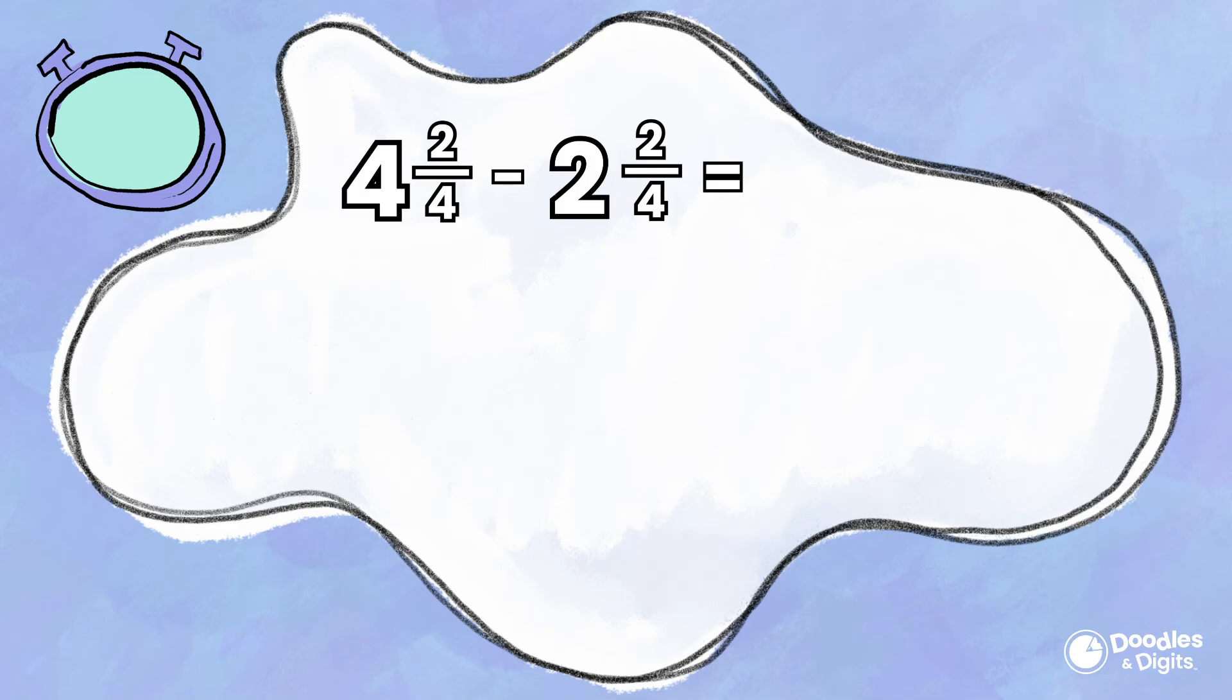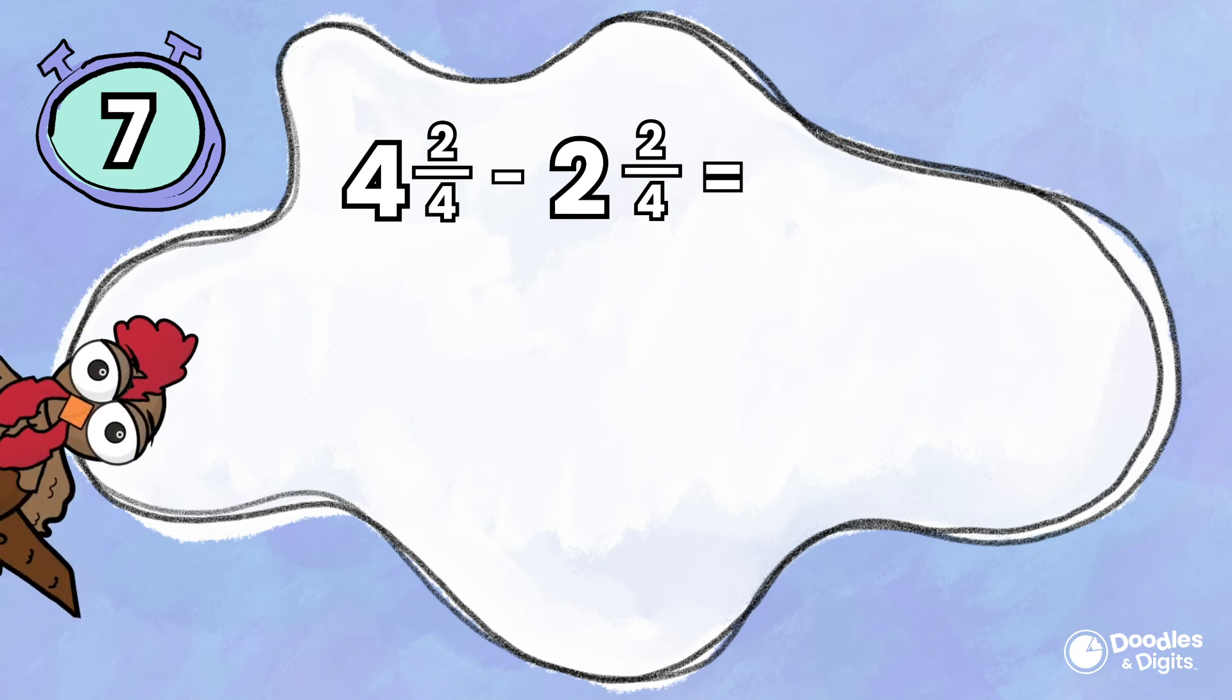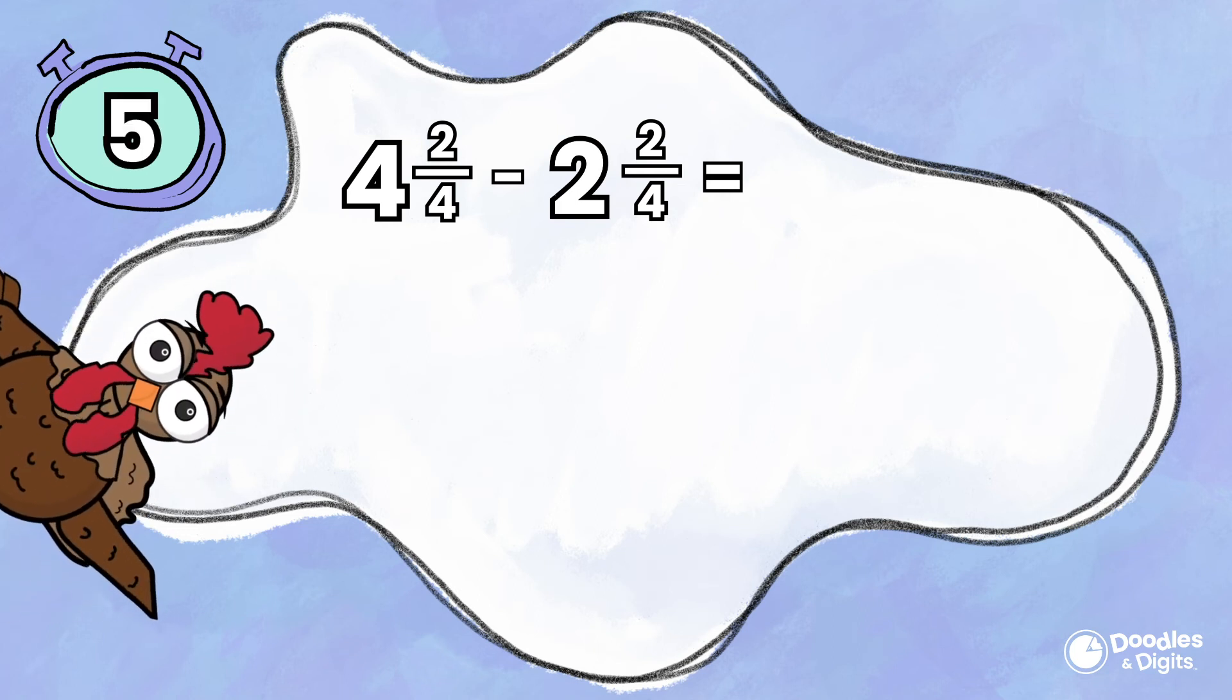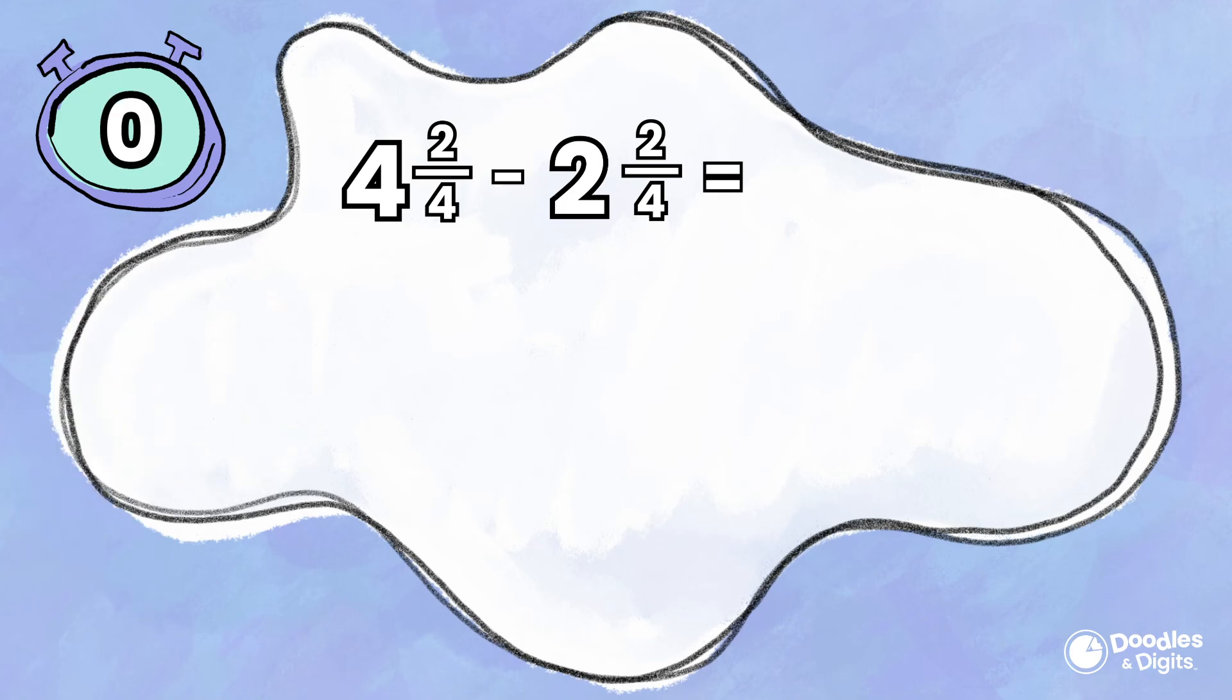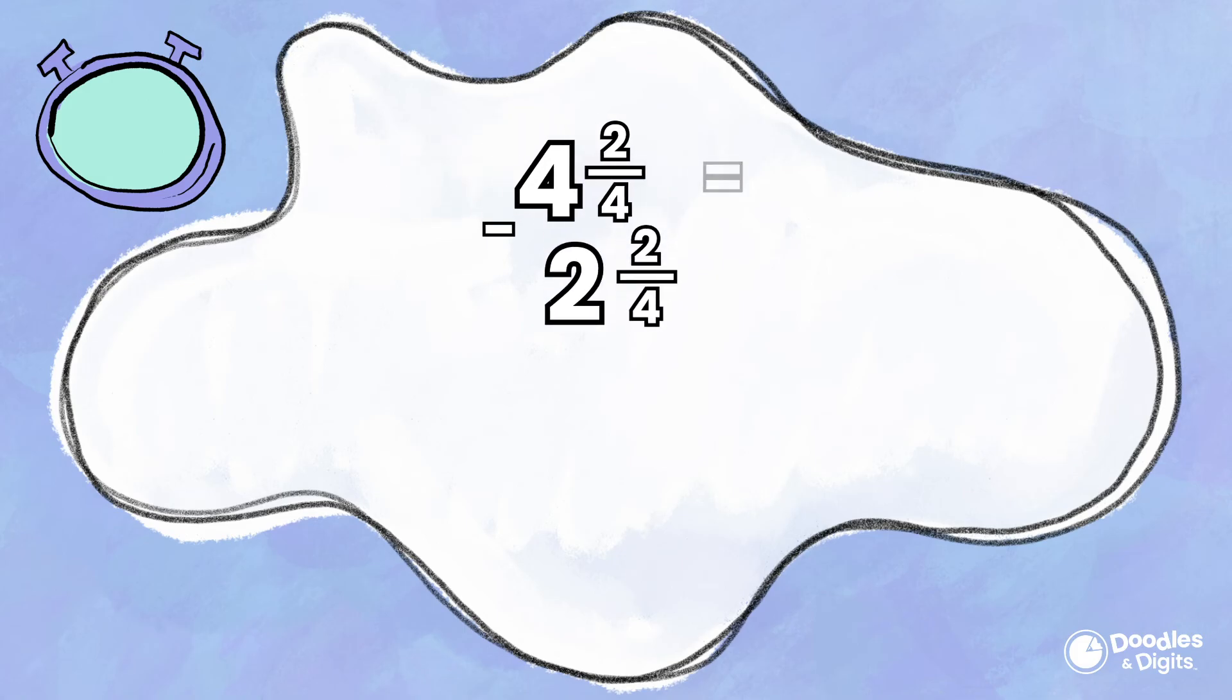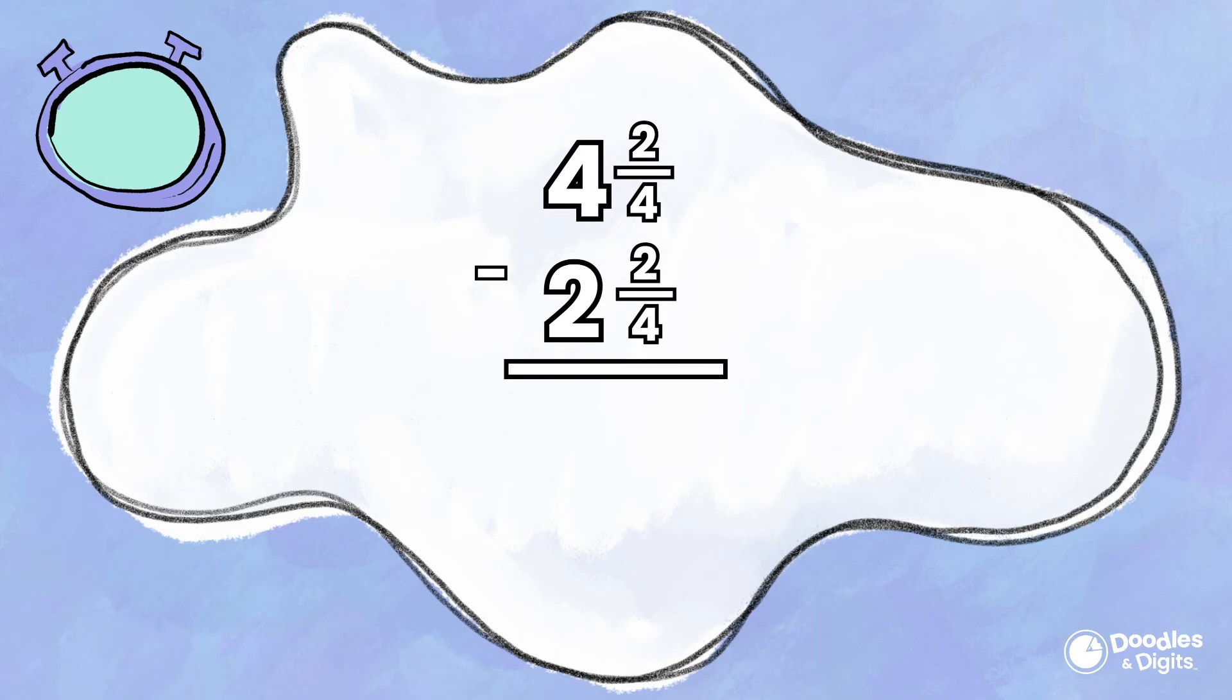Four and two-fourths minus two and two-fourths. I'm going to line these up to subtract. Two-fourths minus two-fourths equals zero-fourths.